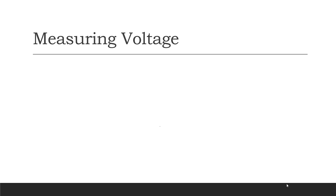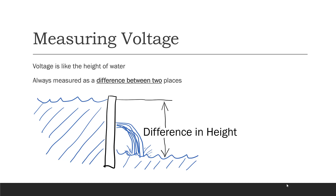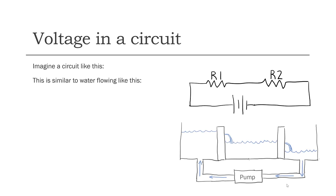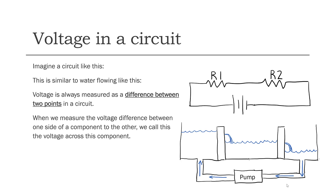Now let's talk about measuring voltage. Voltage is like the height of water, and it's always measured as a difference between two places. Imagine a circuit with one power supply and two resistors in it — that would be very similar to water flowing in our analogy. Voltage is always measured as a difference between two points, and when we measure the voltage difference between two sides of a component, we call this the voltage across that component.